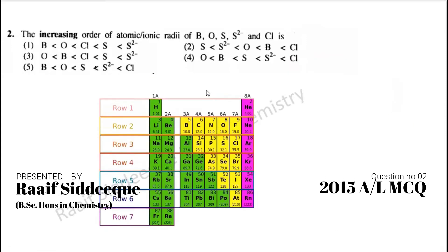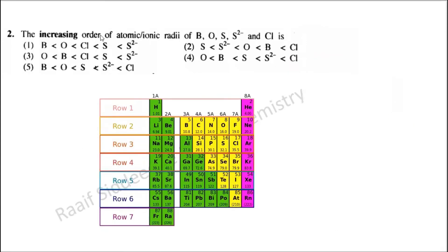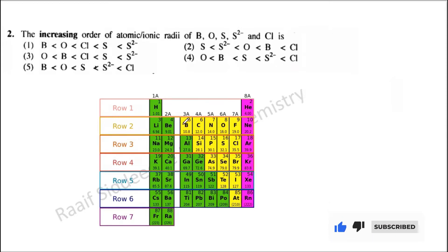Another typical question: find the increasing order of atomic or ionic radii. The reason it says 'atomic or ionic' is because an ion is also given. First, check for the period. Boron and oxygen are in the same period. Then we have sulfur, chlorine, and also S²⁻.